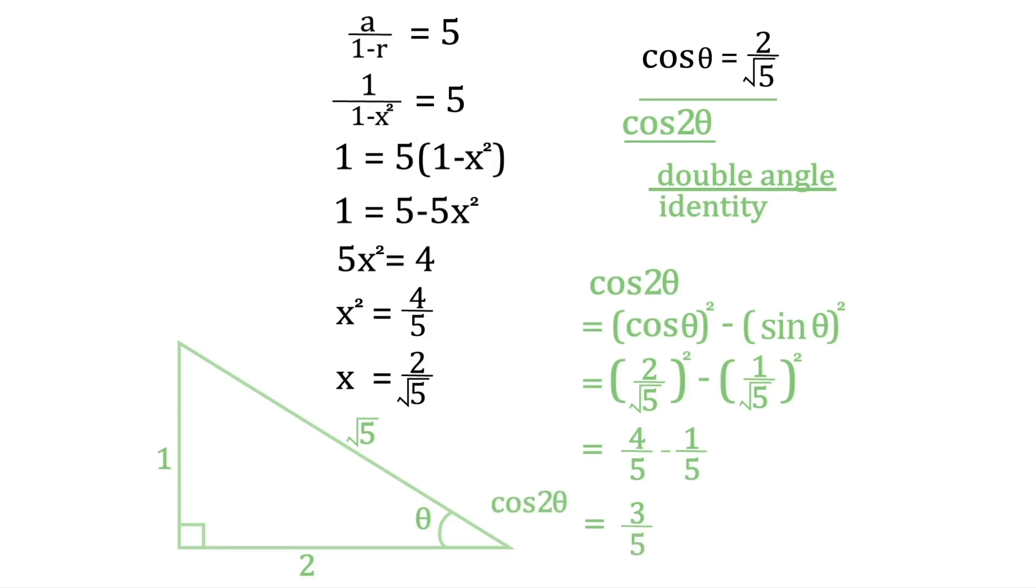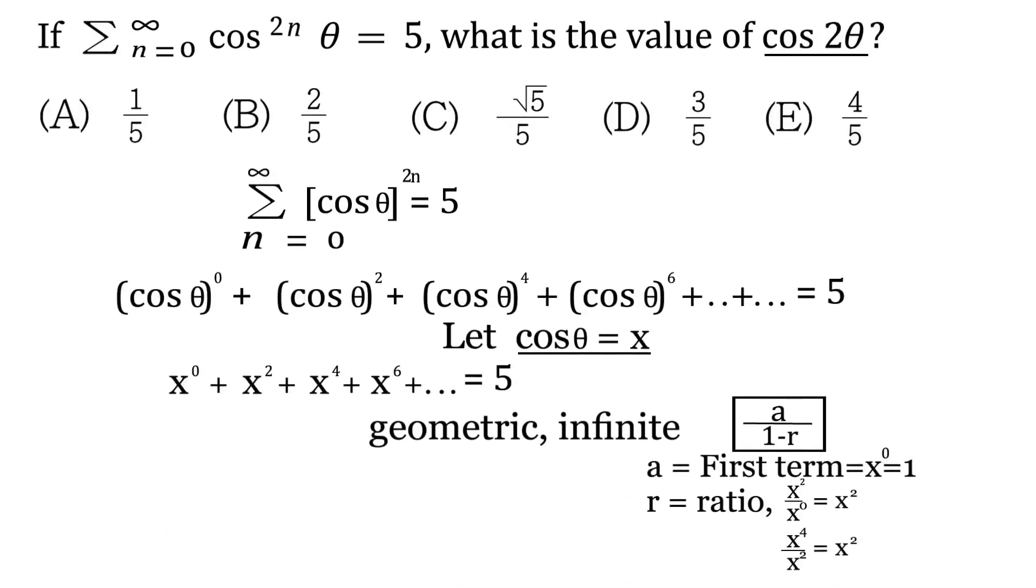So there you have it. So therefore, cos 2 theta is equal to 3 over 5, which is choice D.